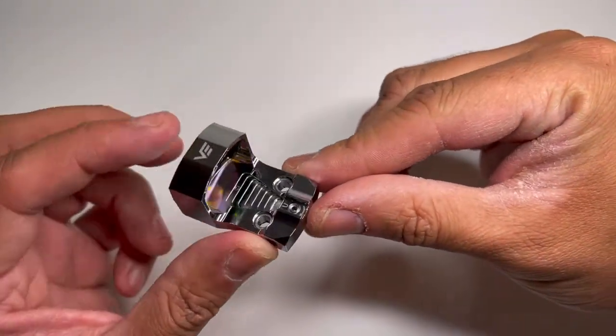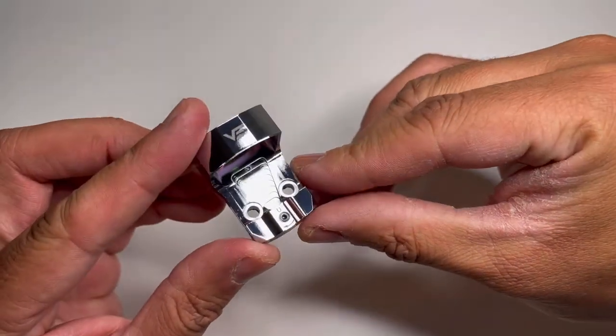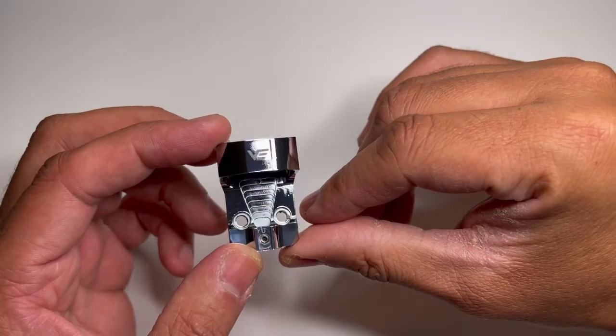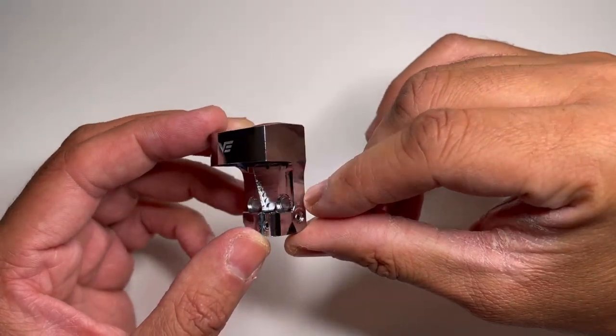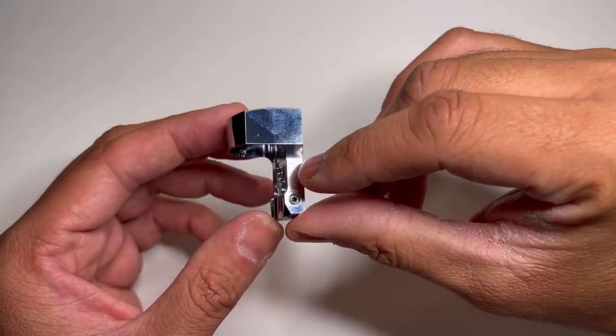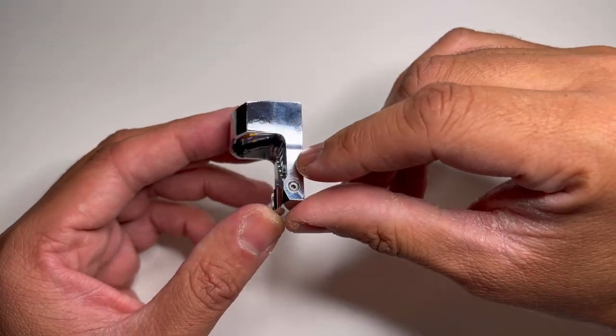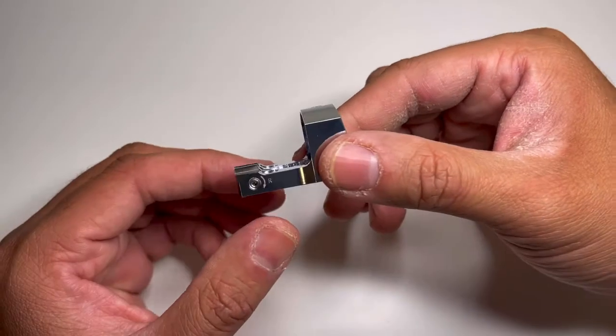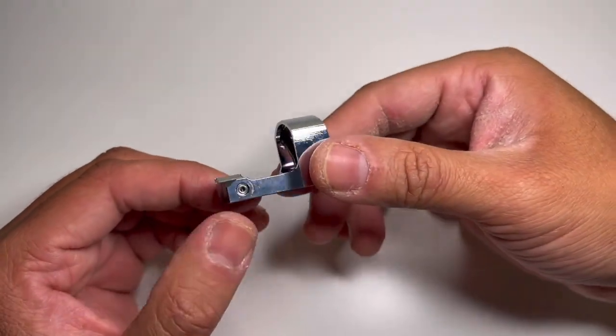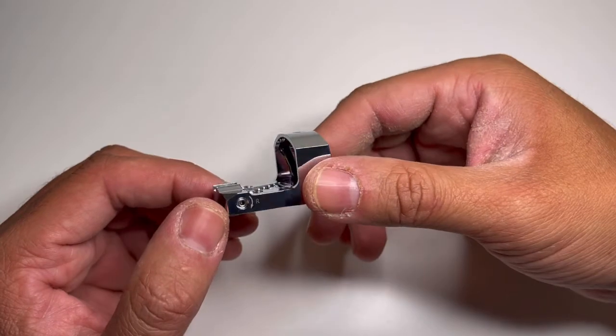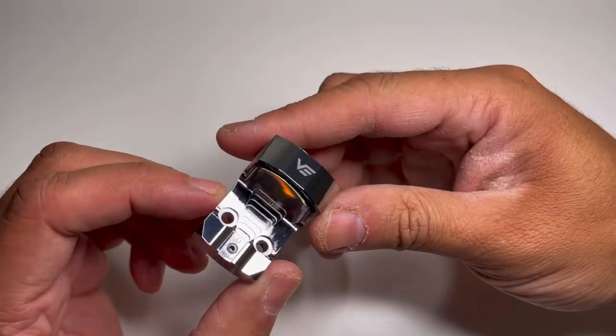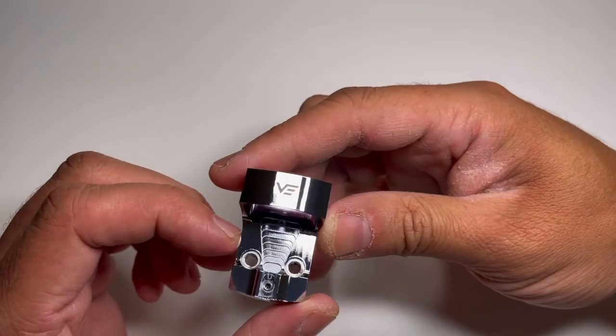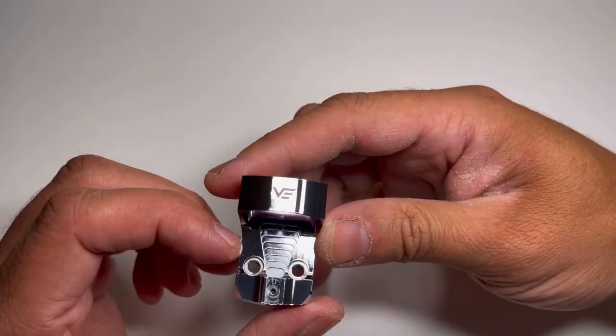But back to this one, the chrome plated version. As you can see, it's very high gloss. Definitely want to keep a microfiber with you to clean up the fingerprints. You have the windage adjustment on the right, elevation, mounting, LED emitter, auto brightness light sensor.